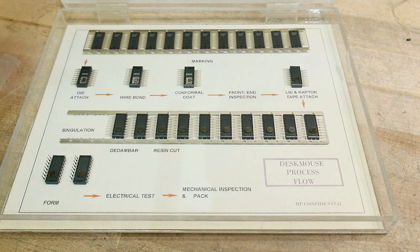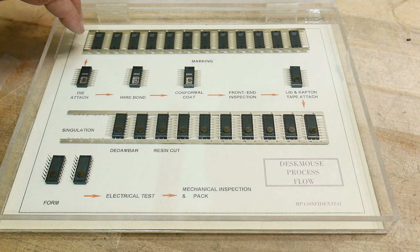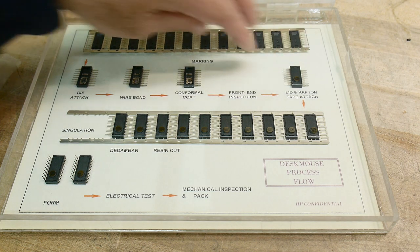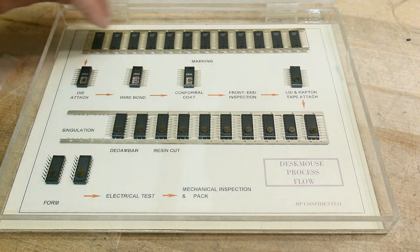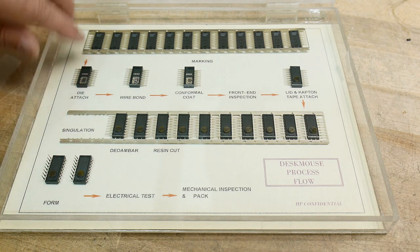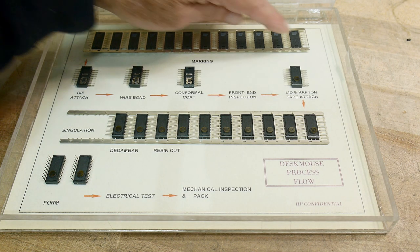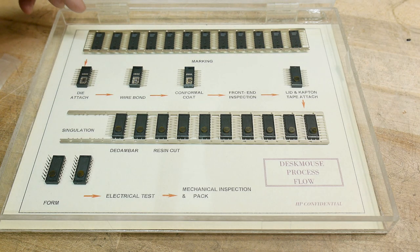And it starts out with a bunch of lead frames, these metal frames here, the lead frames. They will end up being leads. And then there's a plastic package that's molded onto that, so that's step one.